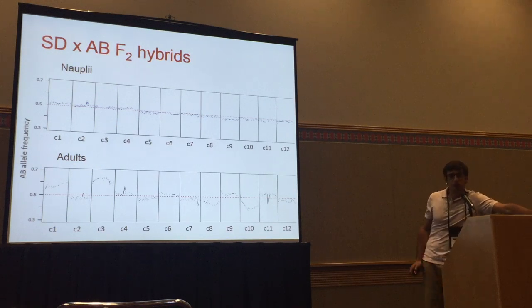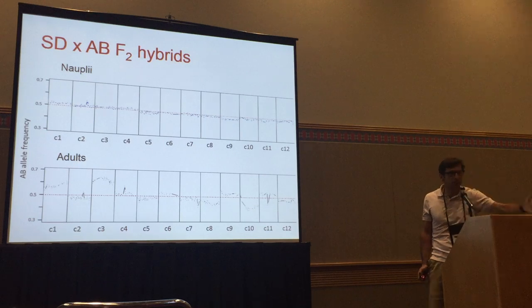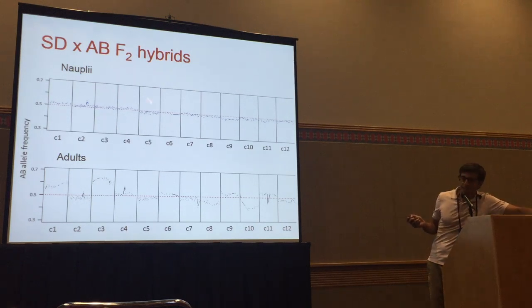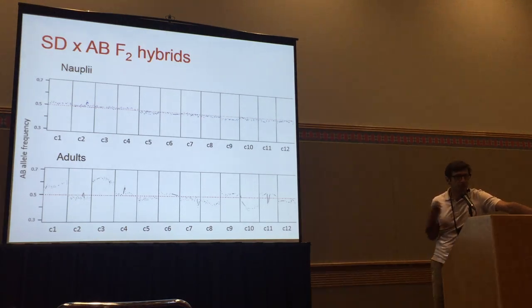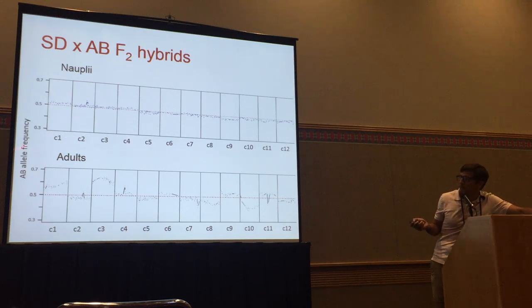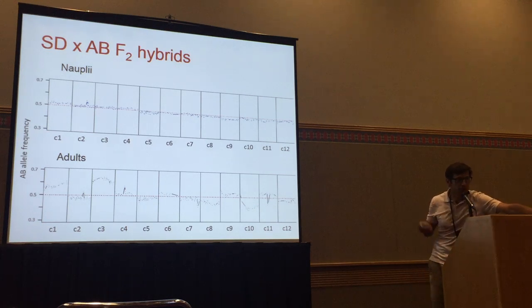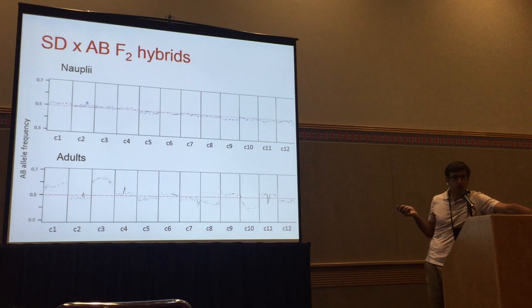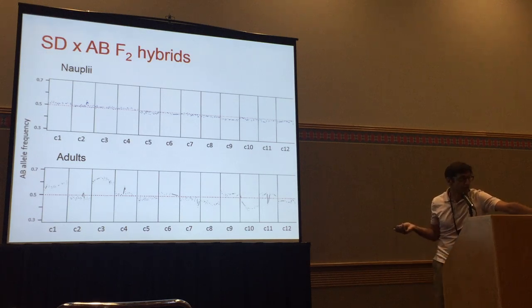First we wanted to make sure we could actually detect shifts in allele frequency in F2 hybrids, since there may not be a lot of allele frequency change at that point. We sequenced one cross — the babies right before they hatched — because before we had seen that there is usually no skew in genotypes at that stage. So we would expect all allele frequencies to be around 0.5. Showing the 12 chromosomes in the copepod, with allele frequency towards the AB population: when they're born there are no shifts, but when they're adults there are shifts in different chromosomes. This shows the shift is due to hybrid inviability and not meiotic drive, and confirms we can observe these shifts in allele frequency.